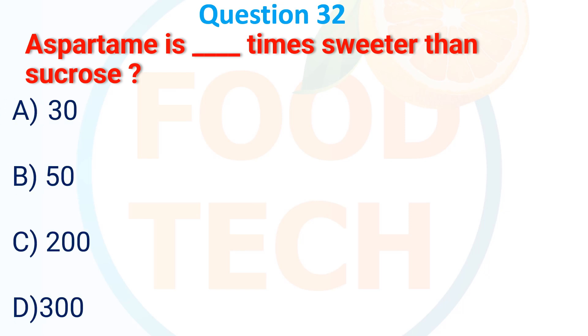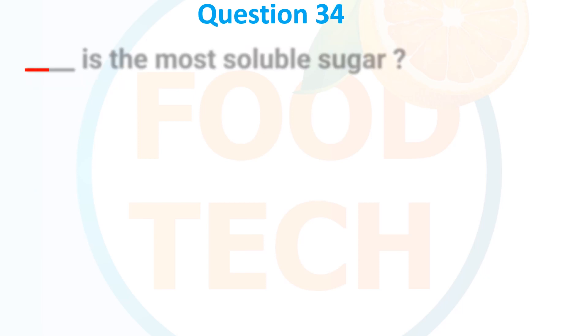Question 33: Aspartame is how many times sweeter than sucrose? A. 30, B. 50, C. 200, D. 300. The answer is C. 200.